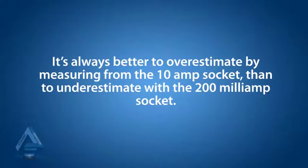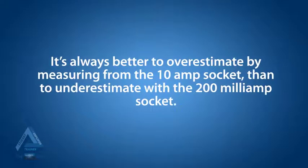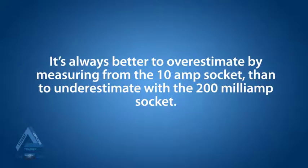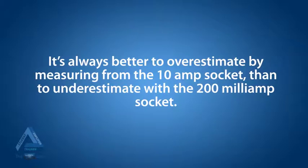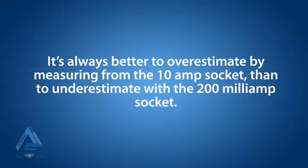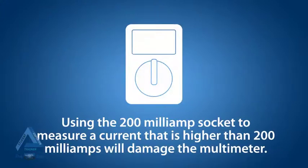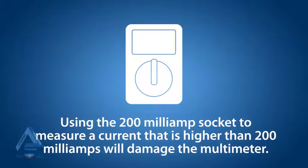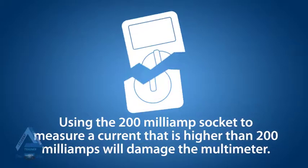If you don't know how large the current is, it is always better to overestimate it by measuring it with the 10 amp socket than to underestimate it with the 200 milliamp socket. Using the 200 milliamp socket to measure a current that is higher than 200 milliamps will damage the multimeter.